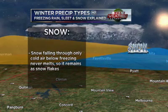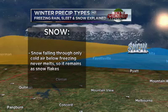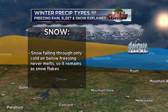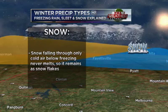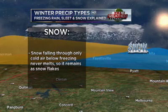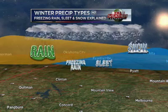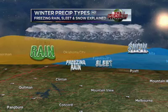Finally, we have snow. Snow is pretty easy — temperatures remain below freezing in the entire layer of air, so it remains as snowflakes. When you get wet snowflakes, that's when you have a very thin layer of warm air that can partially melt the snowflakes. They can clump together, and you get those big, huge snowflakes that fall where temperatures are very close to the freezing mark. Those are all the different types of precipitation — freezing rain, sleet, and snow — and the difference between them and what causes them.